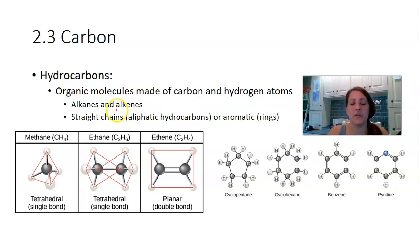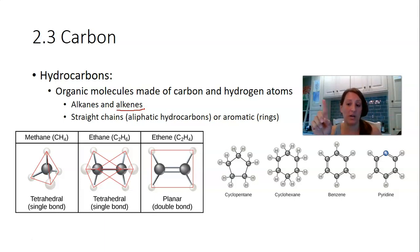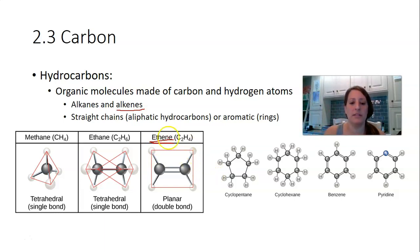The next series is the alkenes — notice the ending -E-N-E, which tells you there's a double bond in the molecule between two carbon atoms, with two pairs of electrons being shared. In this series we start with ethene — there's no methene because meth means one carbon and you can't have a double bond with just one carbon. Ethene has two carbons and its molecular formula is C2H4.